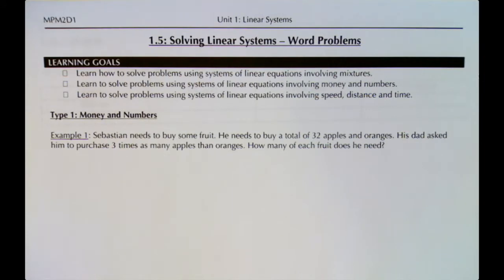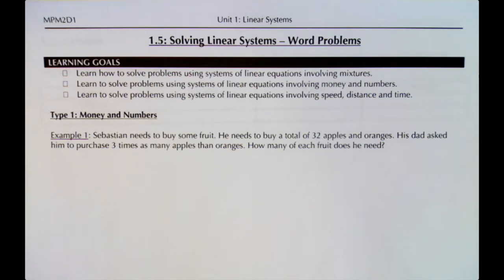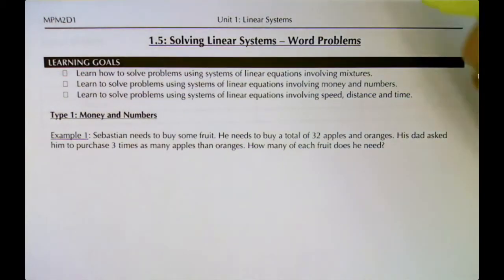In example one, Sebastian needs to buy a total of 32 apples and oranges, and his dad asked him to purchase three times as many apples as oranges. How many of each fruit does he need? You could do guess and check here, but that's not the problem-solving process we're working through. We want to get efficient at writing a system of equations and solving it using substitution or elimination.